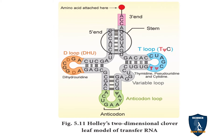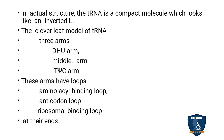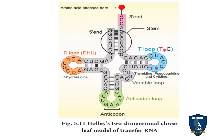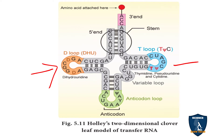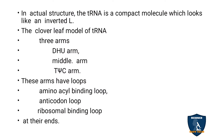Actually, tRNA is not a cloverleaf in reality. Only in the two-dimensional view does it appear as a cloverleaf model. The actual three-dimensional structure is an inverted L-shape. The cloverleaf model has three arms: the D-H-U arm, the TψC arm, and the middle arm. These three arms have loops.